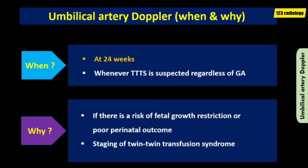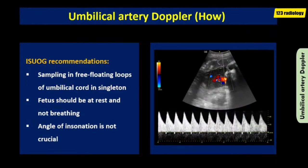Doppler study of the umbilical arteries is used to manage fetal growth restriction and to stage twin-twin transfusion syndrome. The ISUOG guidelines recommend sampling umbilical arteries in free-floating loops of umbilical cord in singletons. The fetus should be at rest and not breathing, as movement and breathing cause variations in the spectral waveform. The angle of insonation is not crucial because all Doppler measurements used are angle-independent. However, an angle close to zero degrees results in the best Doppler shift and best waveform.